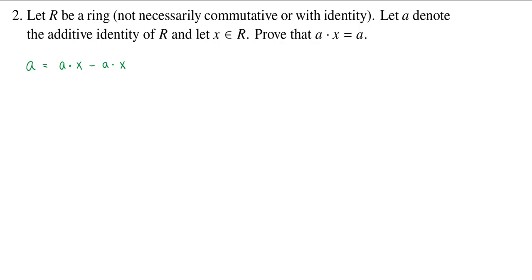Now I can take this A — it's the additive identity — and I can break it up as A plus A. It's the additive identity so you can put two copies and it doesn't change anything. Now I can distribute this X and I get A times X plus A times X minus A times X.